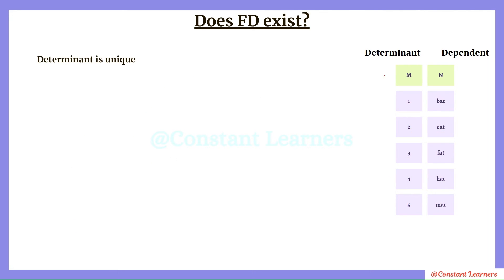The next criteria: when the determinant is unique. If all values in the determinant column are unique, then for every value of M there is exactly one tuple, giving exactly one value of N. So functional dependency will definitely exist when the determinant is unique. To summarize: if the determinant is unique, functional dependency exists. If the determinant repeats, then the dependent values must also be the same for those repeated determinants — only then does functional dependency exist.